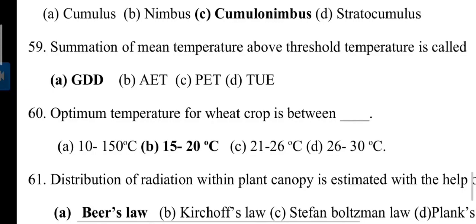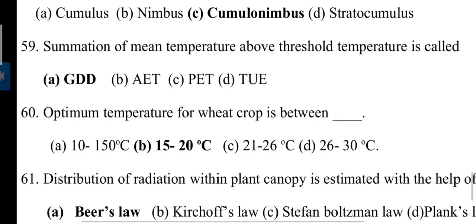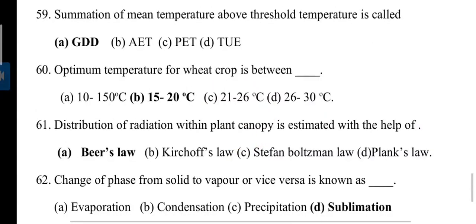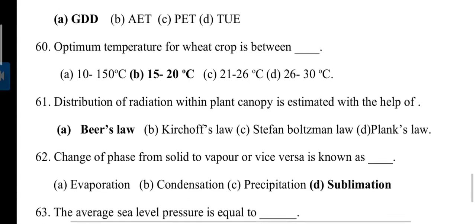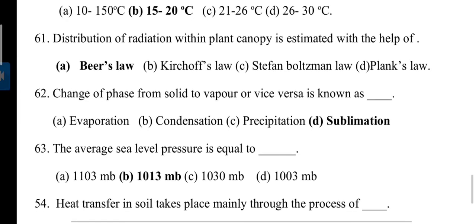Summation of mean temperature above threshold temperature is called GDD. GDD full form is growing degree days, used to estimate the growth and development of insects during the growing season. It can be used to measure plant growth. Distribution of radiation within plant canopy is estimated with the help of Beer's law. This law depends on light transfer.